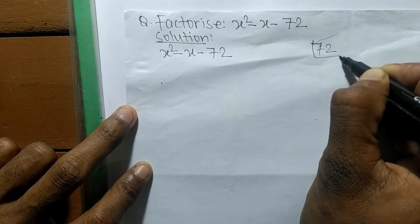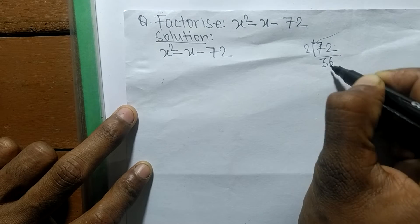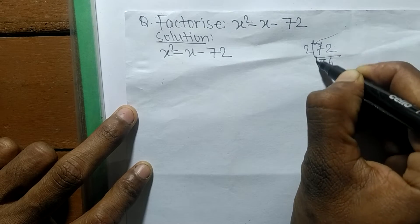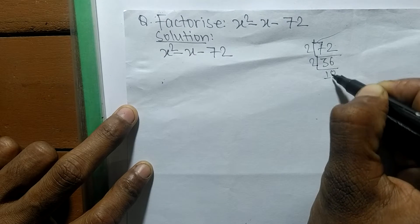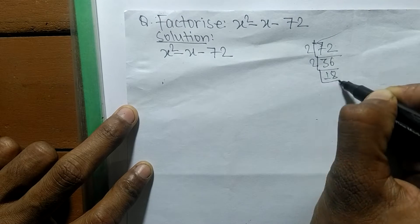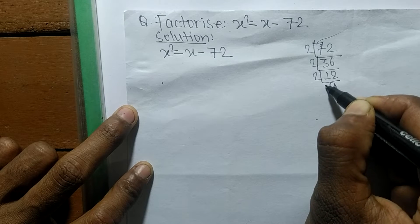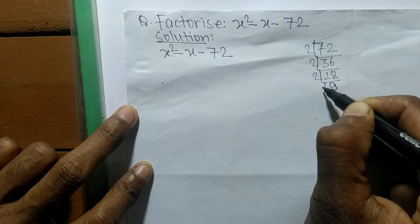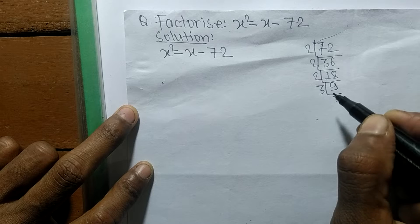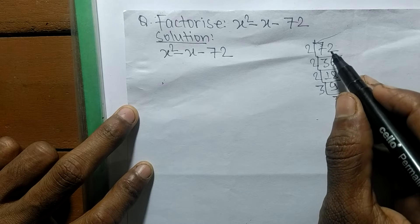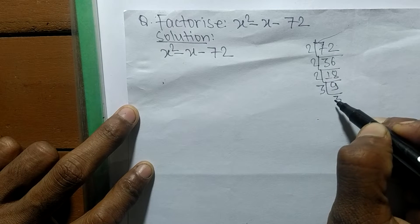72 equals 2 times 36, and 36 equals 2 times 18, and 18 equals 2 times 9, and 9 equals 3 times 3. So we got the prime factors of 72.